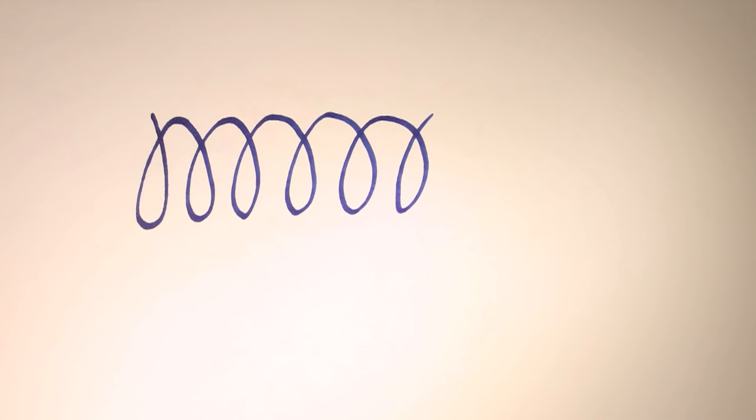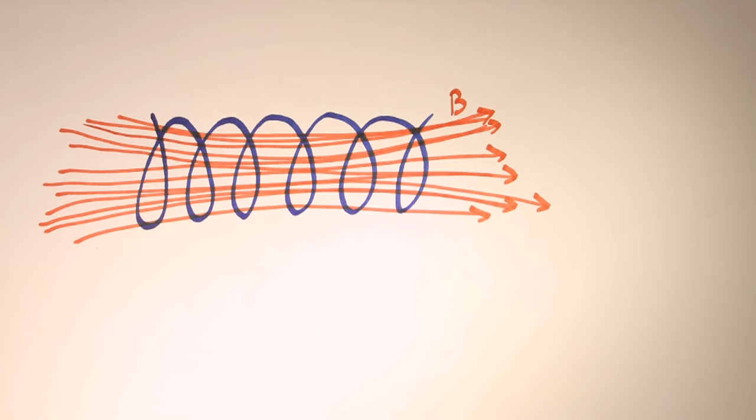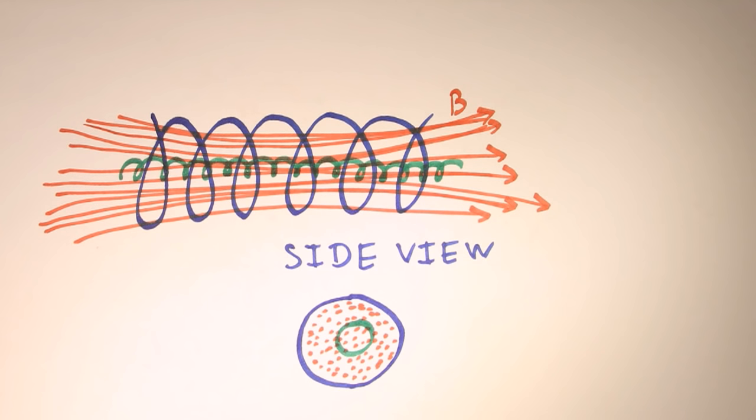We take a solenoid, which is a coil with tightly packed wire. Electric current would create a nice uniform magnetic field inside it. Positively and negatively charged particles would travel in a helical way. Plasma is confined and not touching the walls. All is well, except that we can't make an infinitely long solenoid.